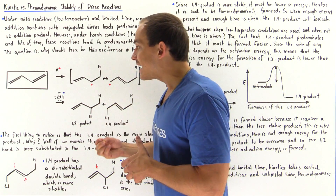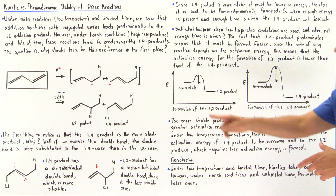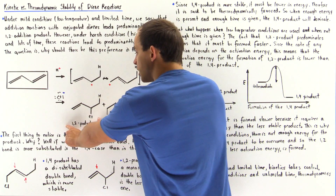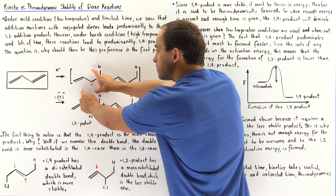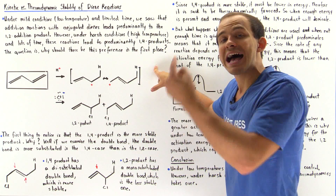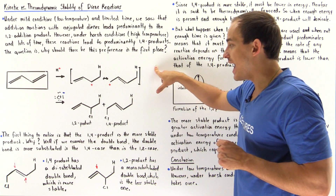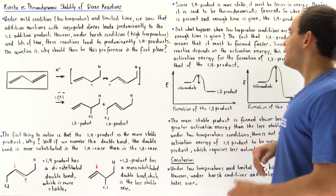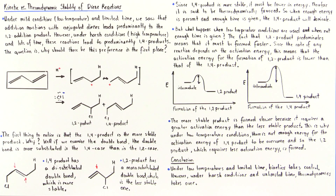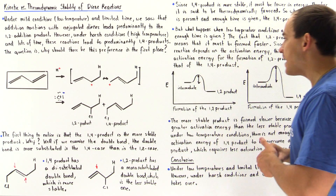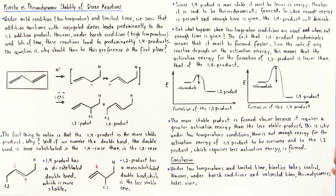Under low temperature conditions with limited time, the fact that the 1,2 product predominates implies that its formation from the intermediate takes place faster and therefore has a lower activation energy than the formation of the 1,4 product from the intermediate carbocation. The rate of reaction is governed by the activation energy — the activation barrier.